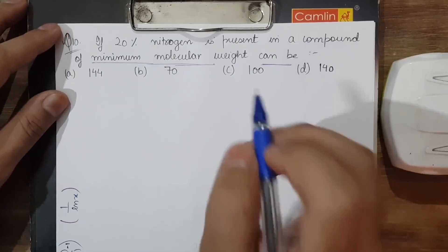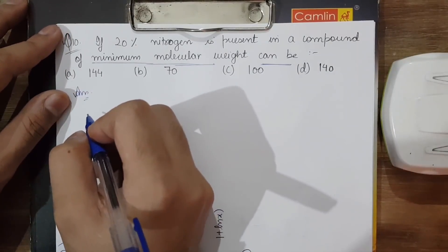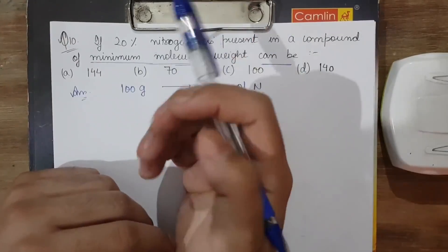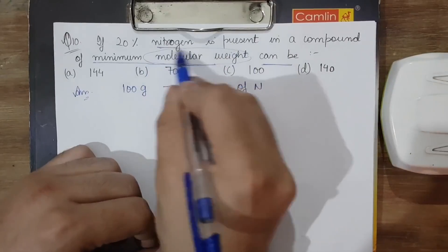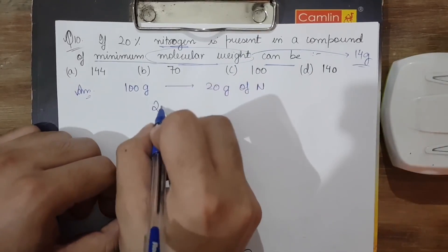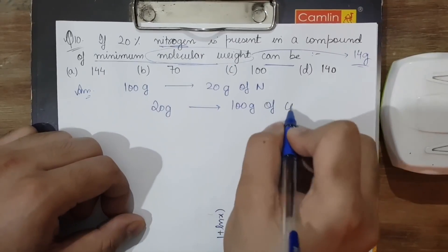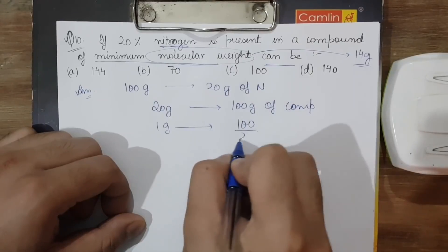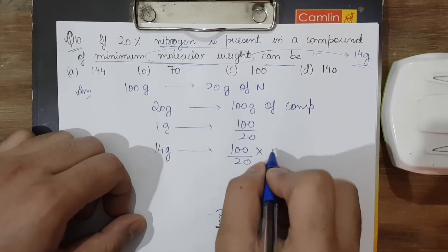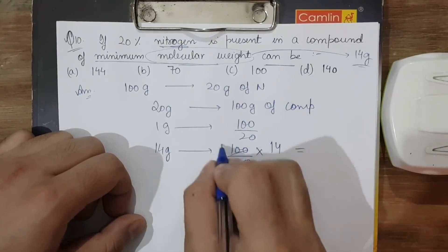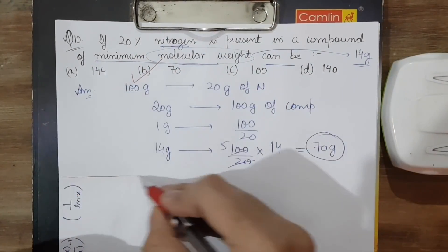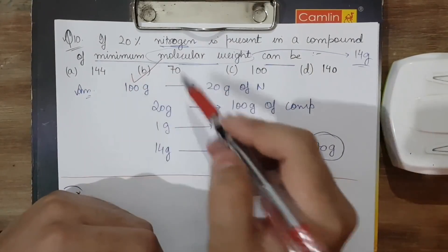Question 10: if 20% nitrogen is present in a compound of minimum molecular weight, find that molecular weight. 20% nitrogen means 20g of nitrogen in 100g of compound. The minimum mass of nitrogen is one atom = 14g. So: if 20g nitrogen is in 100g compound, then 14g nitrogen is in (100/20) × 14 = 70g of compound. The minimum molecular weight is 70g/mol, so option B is correct.